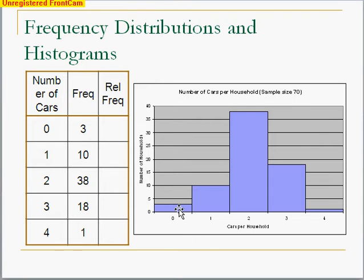So notice 0 was down here at 3, 1 was up here at 10, 2 at 38, 3 at 18, and 4 at 1. So notice that the boxes are all the same width, and that's really important. And they're all touching each other, which is different than a bar graph. So make sure you realize the characteristics of this histogram. It looks like a bar chart, but it's not. It's called a histogram.